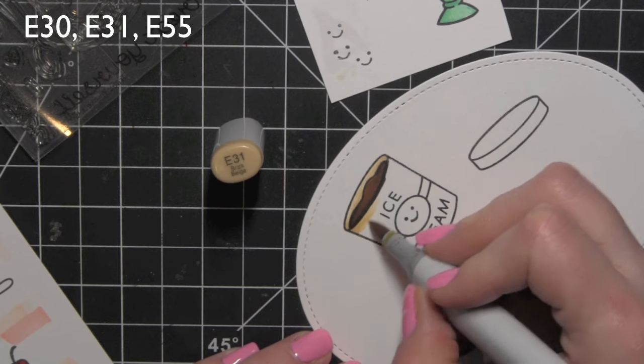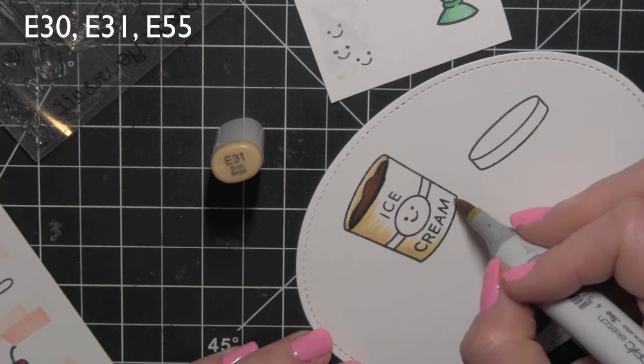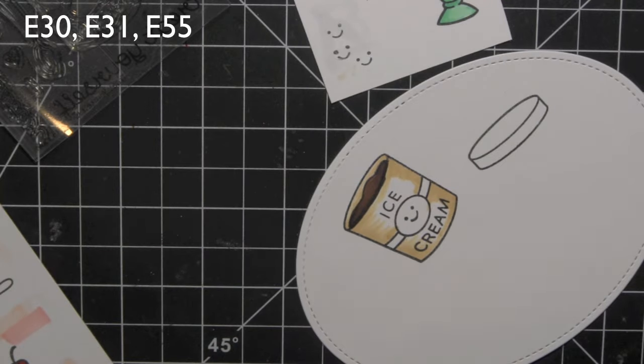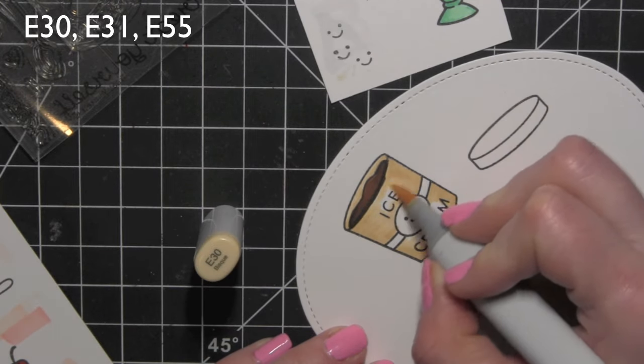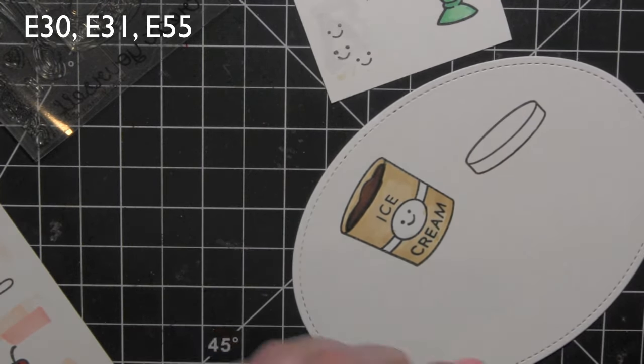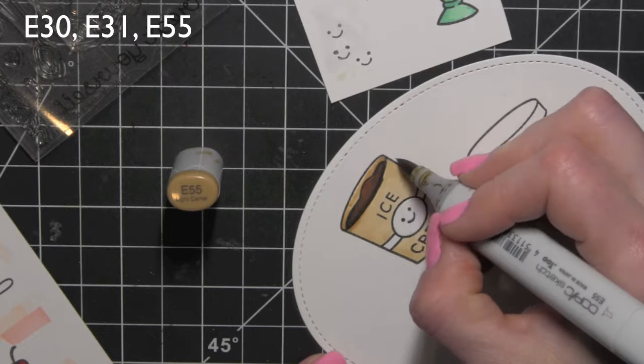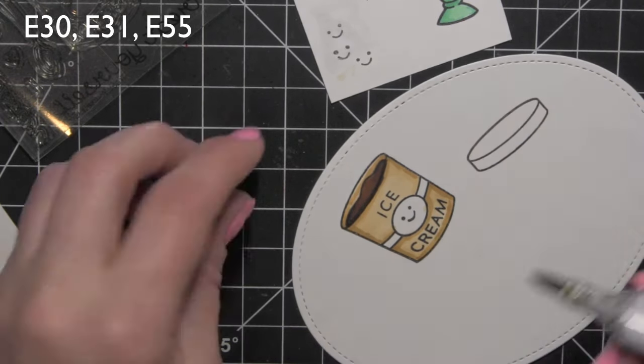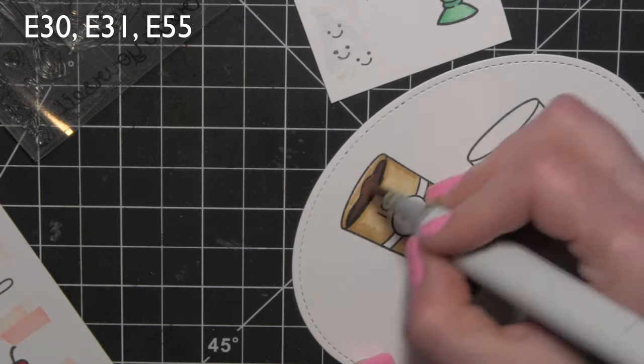I didn't like how I colored the ice cream bucket the first time, that's why I have switched over to another sheet of paper and I'm going to color the ice cream bucket in shades of brown using E30, 31, and 55. I'll just keep coloring with those until I get the shading the way I want it to look.